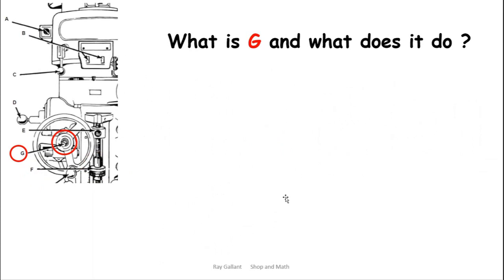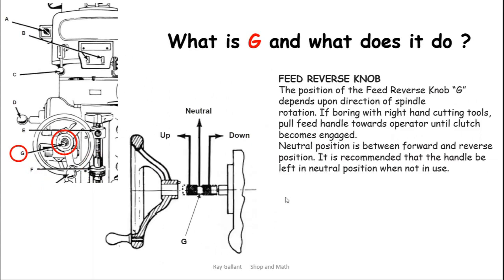G is a feed reversing knob. You can set this to make the machine feed downward or upward or put it in neutral. I have another video just on this operation as well, located on YouTube shop and math.